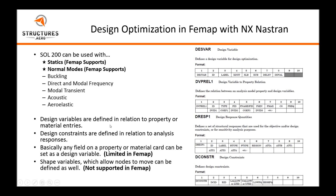The design variables are defined in relation to property or material entries, and your design constraints are defined in relation to analysis responses. Basically, any field on a property or material card can be set as a design variable, although this is limited in Femap. If you want to look into this further in the quick reference guide or in the optimization solution manual, here are some of the Nastran cards that we'll be using in Solution 200.